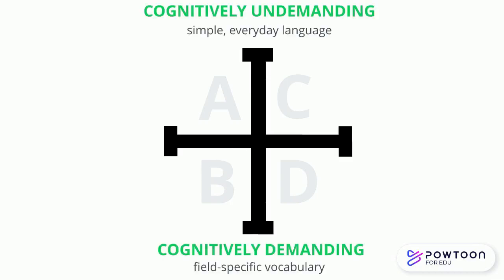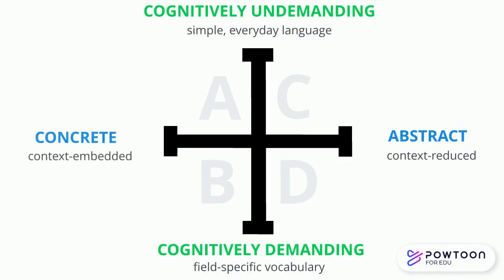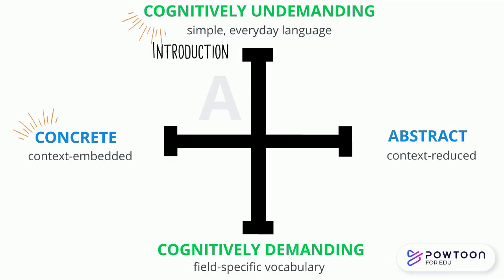This is a commonly known graph for BICS and CALP that helps to show the level of cognitive demands versus how abstract or concrete the language activity is. This graph is split into four quadrants. Quadrant A includes concrete and cognitively undemanding language activities such as a face-to-face introduction, conversation, or a video call.